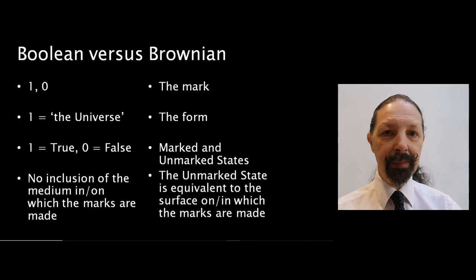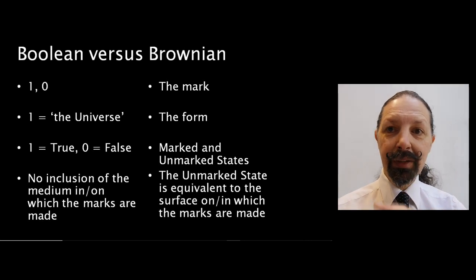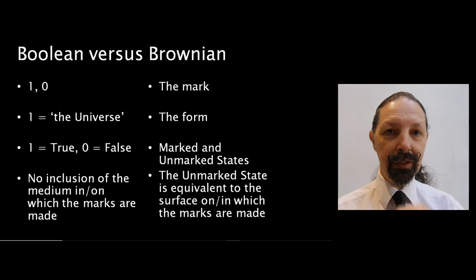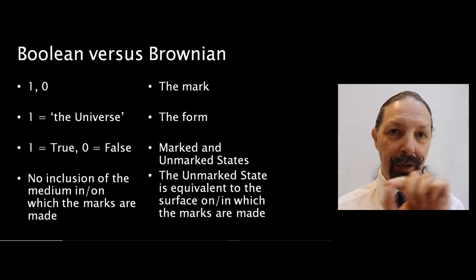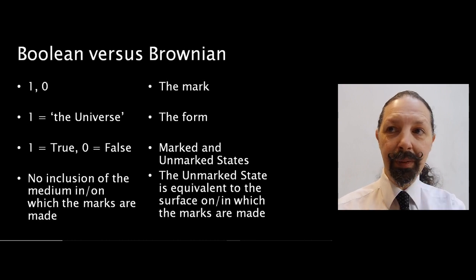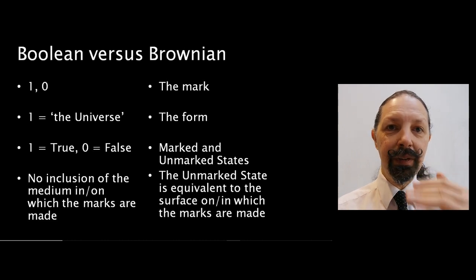And most importantly, in the Boolean system there is no inclusion of the medium in which or on which the marks are made. I say in which and on which because if you have an idea, you have it in the mind. And if you're writing down your idea in marks on paper, they are on the paper. And in the Brownian system, the unmarked state is equivalent to the surface or medium in which or on which the marks are made.